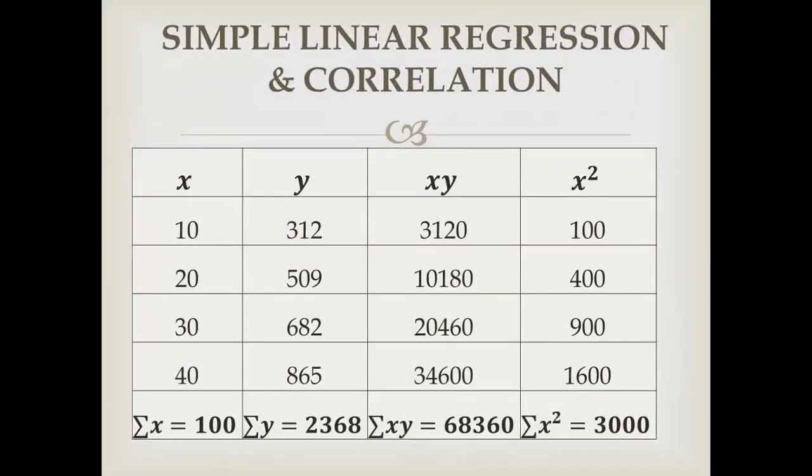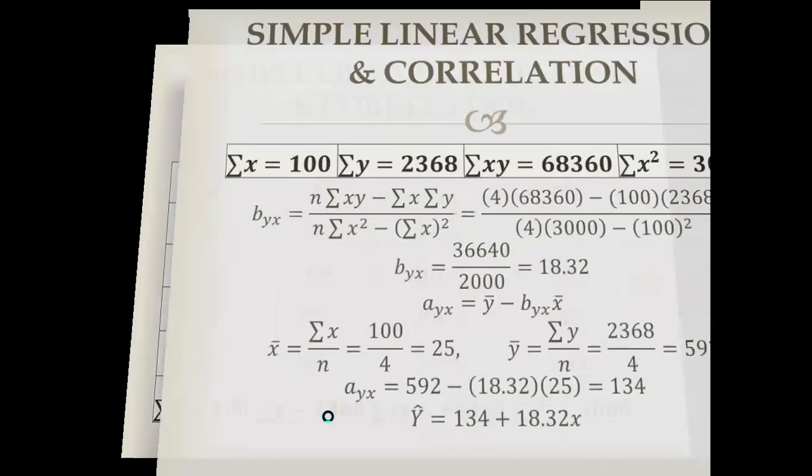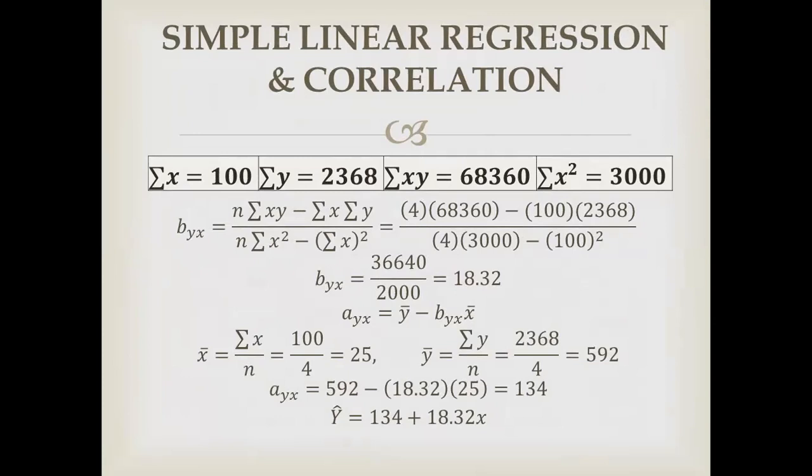We will do calculations on the data. We will multiply x into y column: 10 into 312 is 3,120, 20 into 509 is 10,180, 30 into 682 is 20,460, and 40 into 865 is 34,600. Then we calculate x squared.